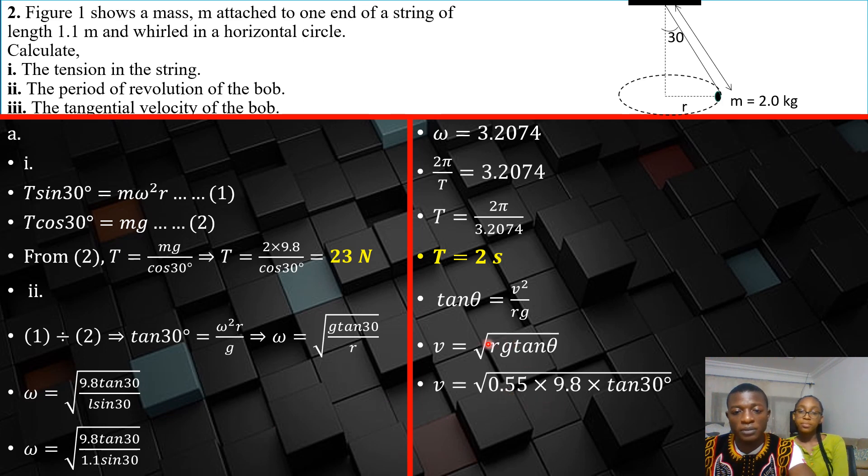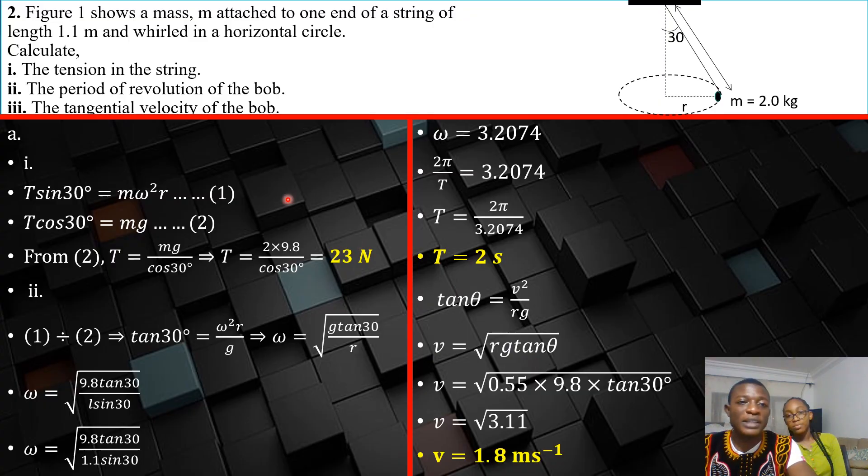So that's 0.55 times g times tan theta. Our v is the square root of that and our v is 1.8 meters per second. That's it guys. Hope you enjoyed it, hope you liked it. Let's move on to the next.